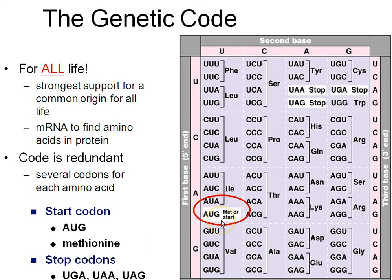There's only one start codon — AUG — and there are several stop codons. As you might guess, start codons start the process of translation, stop codons end the process of translation, and then the protein detaches from the ribosome.